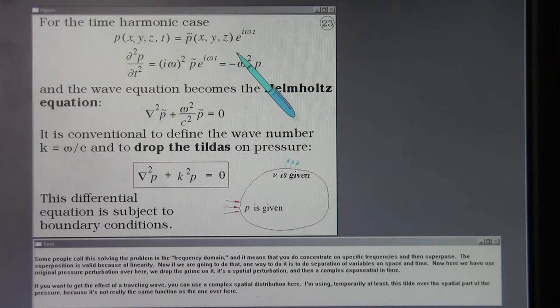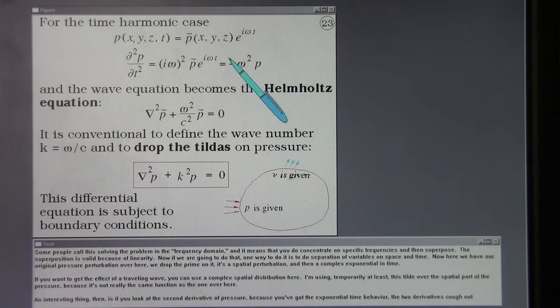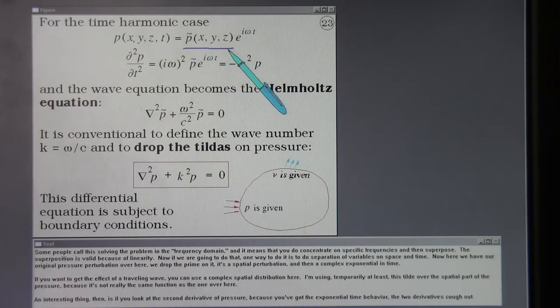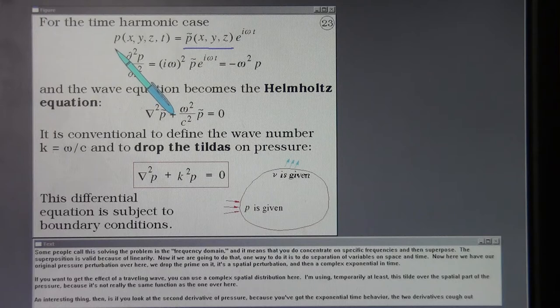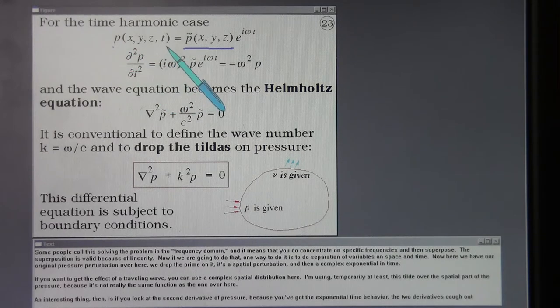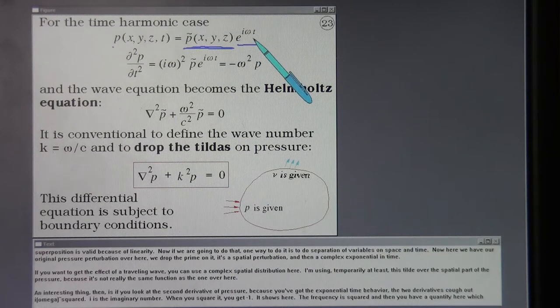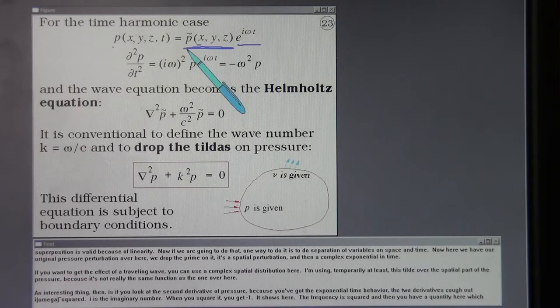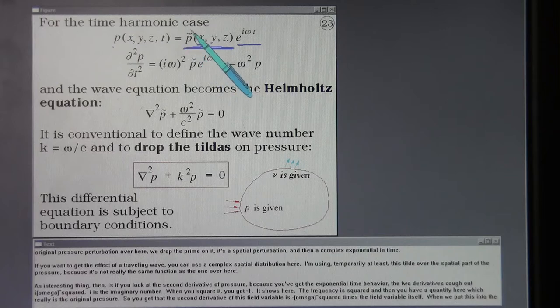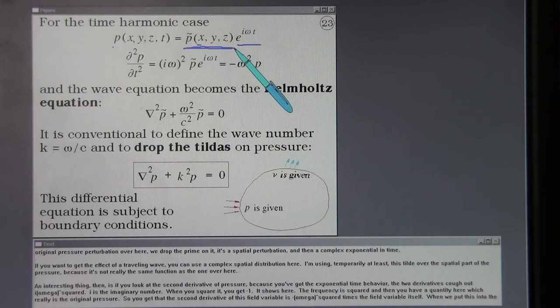If we're going to do that, one way to do it is do separation of variables on space and time. Here we have our original pressure perturbation over here. We've dropped the prime on it. It's a spatial perturbation and then a complex exponential in time. If you want to get the effect of a traveling wave you can use a complex spatial distribution here. I'm using temporarily at least this tilde over the spatial part of the pressure because it's not really the same function as the one over here.